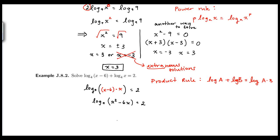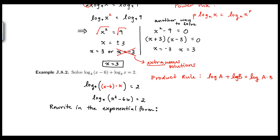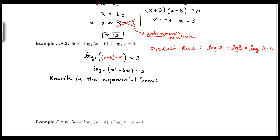Now I have log base 4 of x squared minus 6x equal to 2. I don't have a log on each side, so I can't use that logarithm property. Instead, I'll rewrite this in exponential form: base 4 to the exponent 2 equals the value x squared minus 6x.